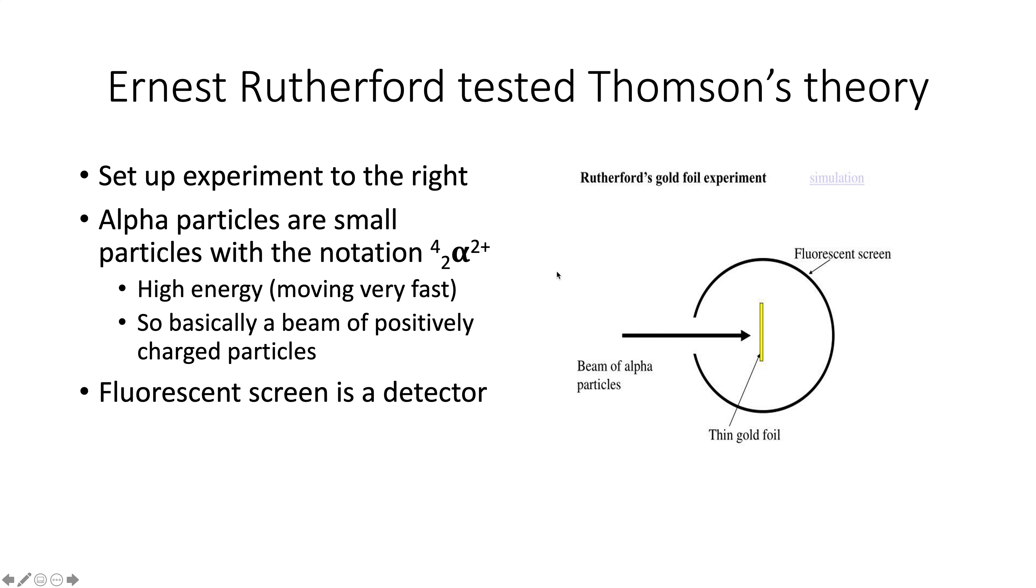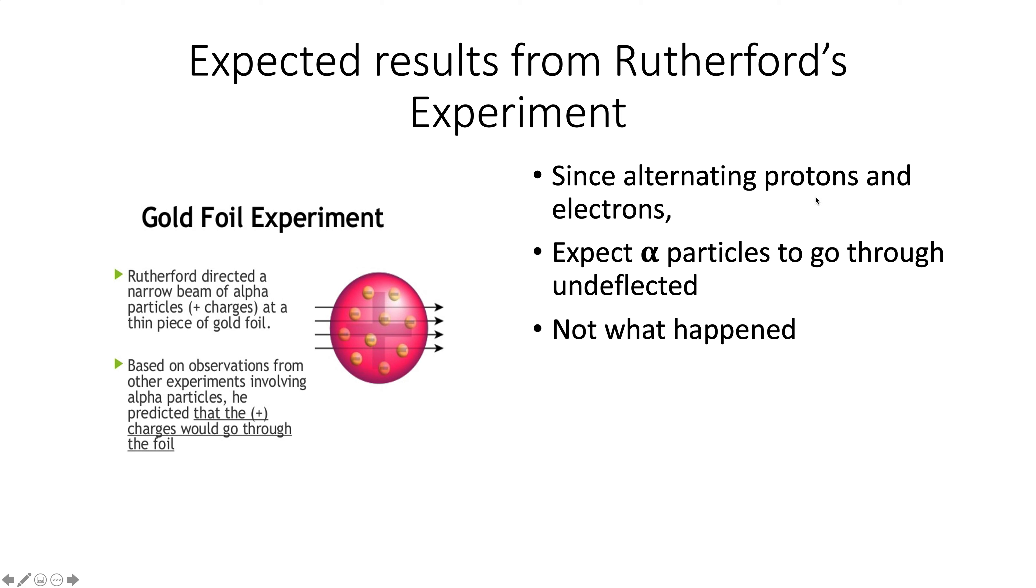Anyway, so let's look at what he thought would happen because when we test a hypothesis, we're saying, if what we think is right, if this is what we think is going on, then when we do this, this should happen. So the hypothesis was this. Since there's alternating protons and electrons, you'd expect the alpha particles to go through, and they would, as they came across a negative, they'd be pulled towards it. As they came across a positive, they'd be pushed away. So you'd expect it to zig and zag and zig and zag and basically come out undeflected or deflected at small angles because the charges it would encounter would cancel out.